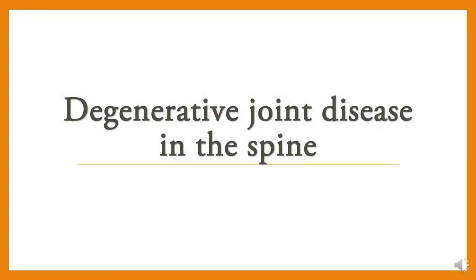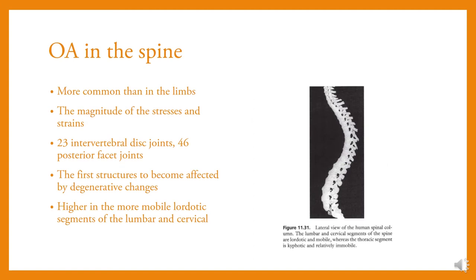Degenerative Joint Disease in the Spine. OA in the spine is more common than in the limb due to the magnitude of stresses and strains. There are 23 intervertebral disc joints and 46 posterior facet joints — the first structures to become affected by degenerative changes — with incidence higher in the more mobile lordotic segments of the lumbar and cervical spine.